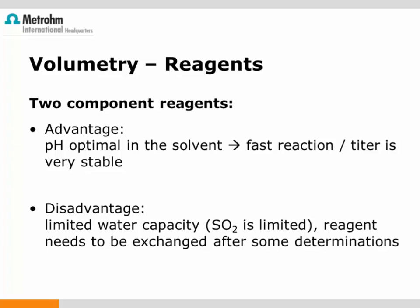Because of the shorter titration times, the influence from atmospheric moisture is smaller compared to the slower one-component reagents. A disadvantage is that after the solvent has been added to the titration cell, no more sulfur dioxide is added — sulfur dioxide is the limiting component — and the solvent needs to be exchanged after some determinations to renew its sulfur dioxide content.